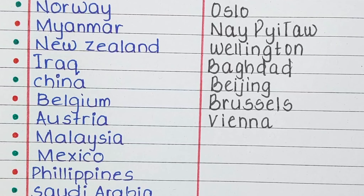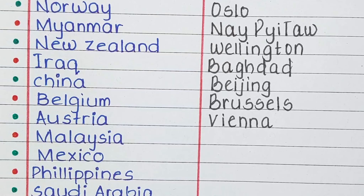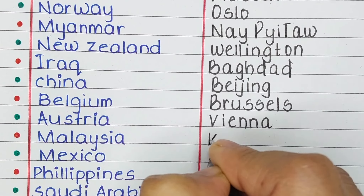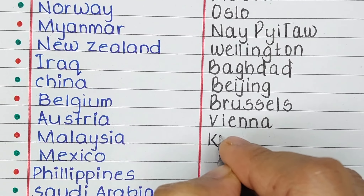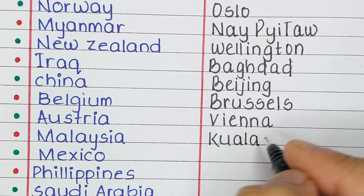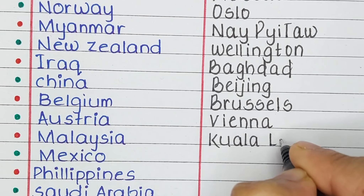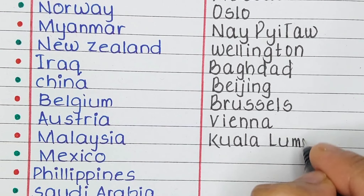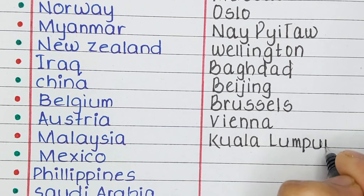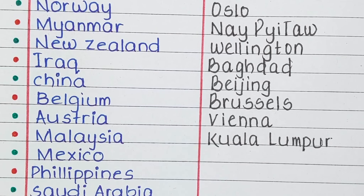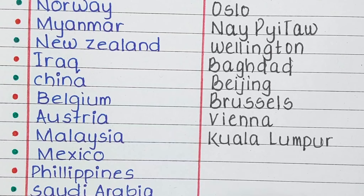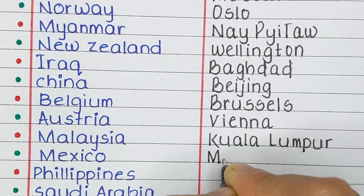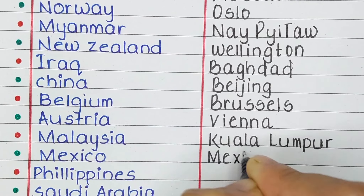Next is Malaysia. The capital of Malaysia is Kuala Lumpur. Next is Mexico. The capital of Mexico is Mexico City.